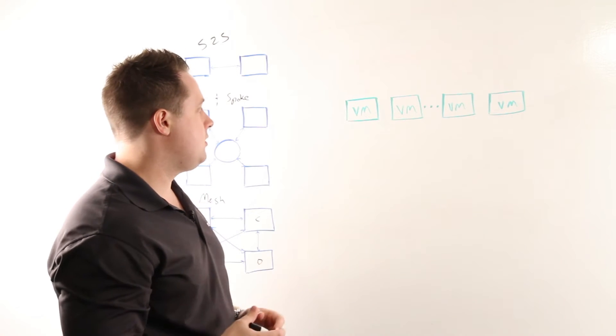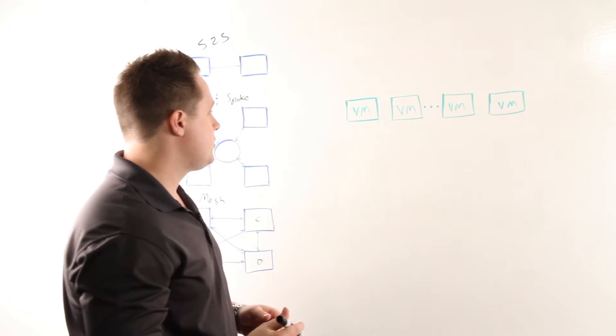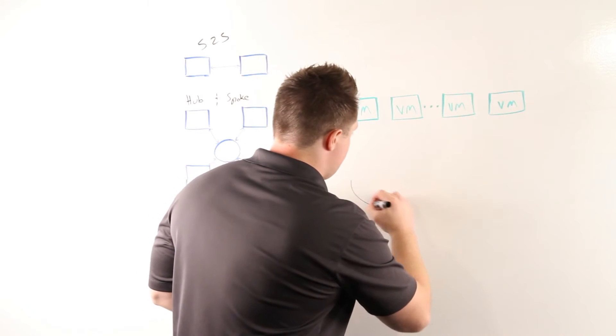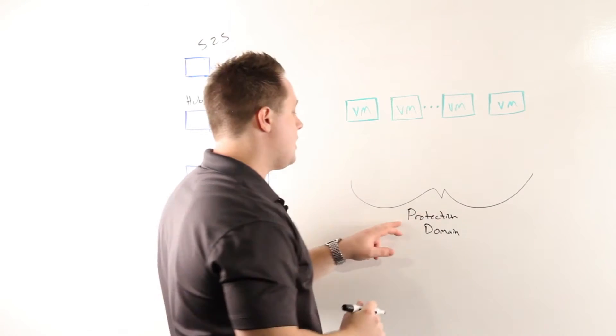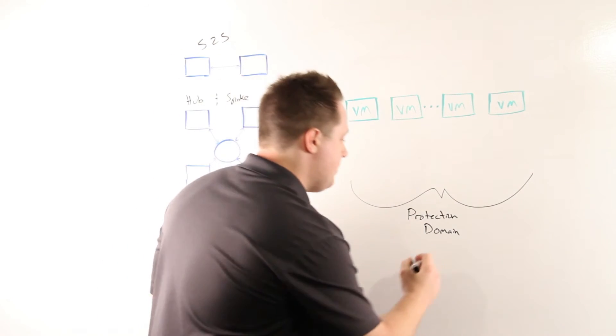Within this, there are two main constructs. The first one is a protection domain. Essentially, a protection domain is a group of virtual machines or files. Most commonly, you'll see this referred to as a PD.